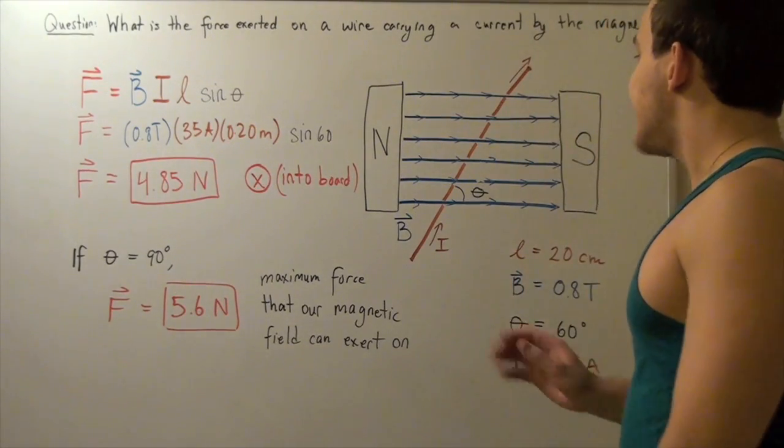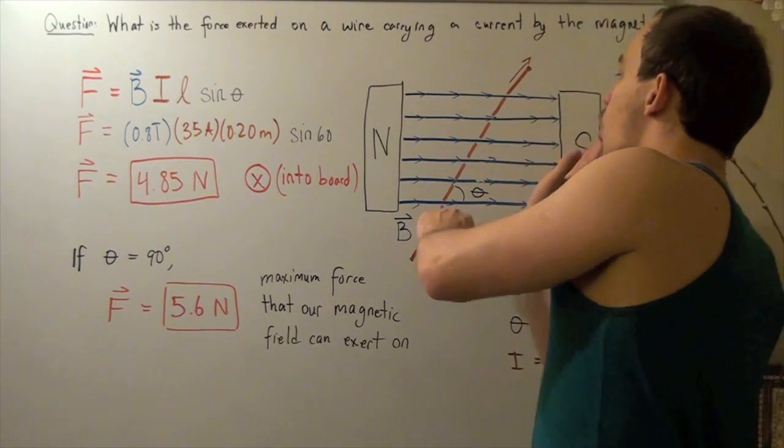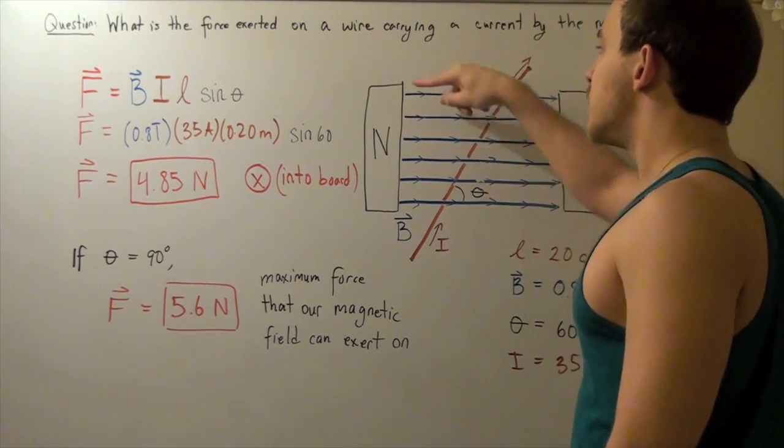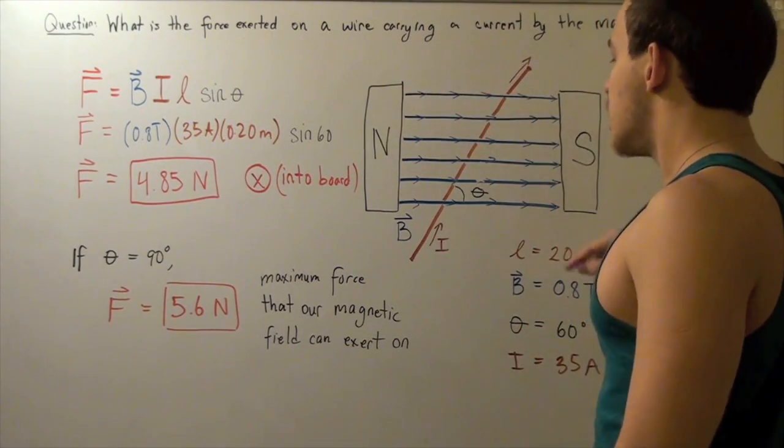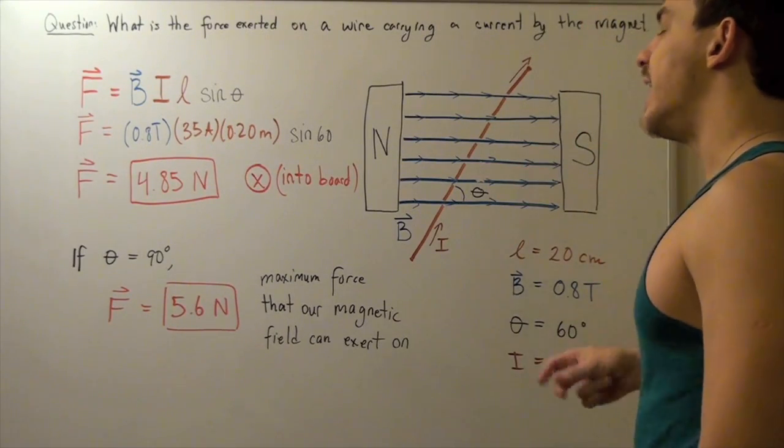Now, suppose I take my wire, and I orient it this way. So, perpendicularly to our magnetic field lines. So, our angle becomes 90 degrees.